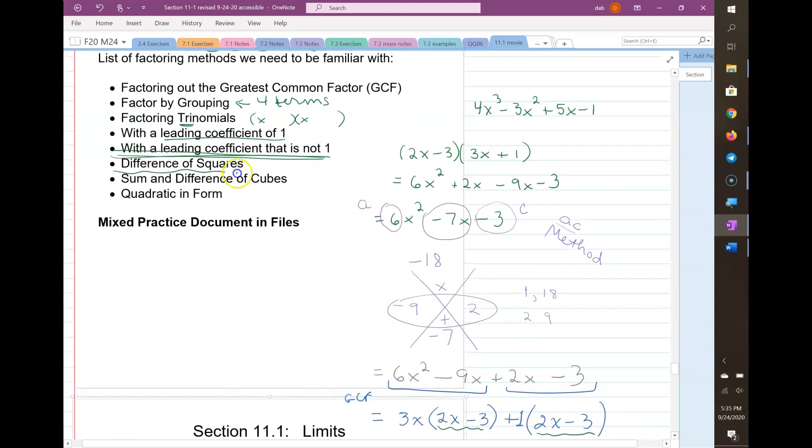So then we have the difference of squares and the sum and difference of cubes. These guys only ever have two terms, right? Because it's either the sum of two squares or the difference of two squares or the sum of two cubes or the difference of two cubes. So those formulas are in the book. But a quick refresh, if you have a² - b², that's a difference of squares. And it factors to (a + b)(a - b). So hopefully that seems familiar.